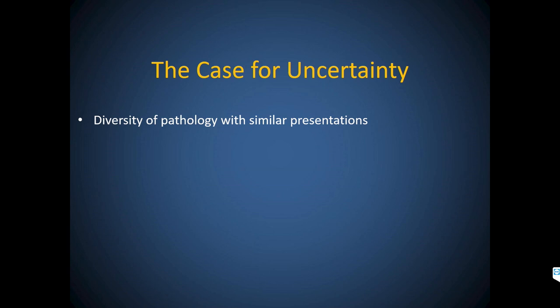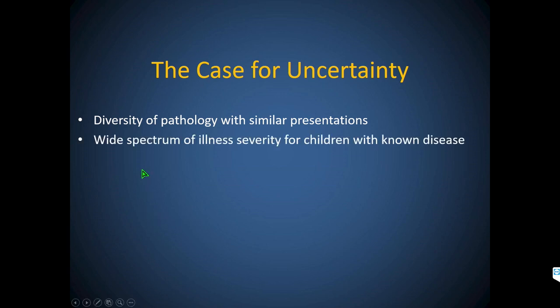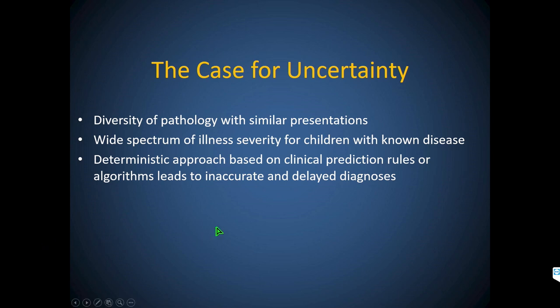The case for uncertainty: I see a lot of diverse pathology that comes in looking like infection but isn't. Recognizing that it may not be infection and pursuing the final answer is appropriate. There's a wide spectrum of illness severity — osteomyelitis ranges from life-threatening in the ICU on pressors requiring multiple surgeries, to a simple bone infection requiring no intervention and just a couple days of hospitalization. The deterministic approach based on clinical prediction rules or algorithms leads to inaccuracy and delayed diagnosis.